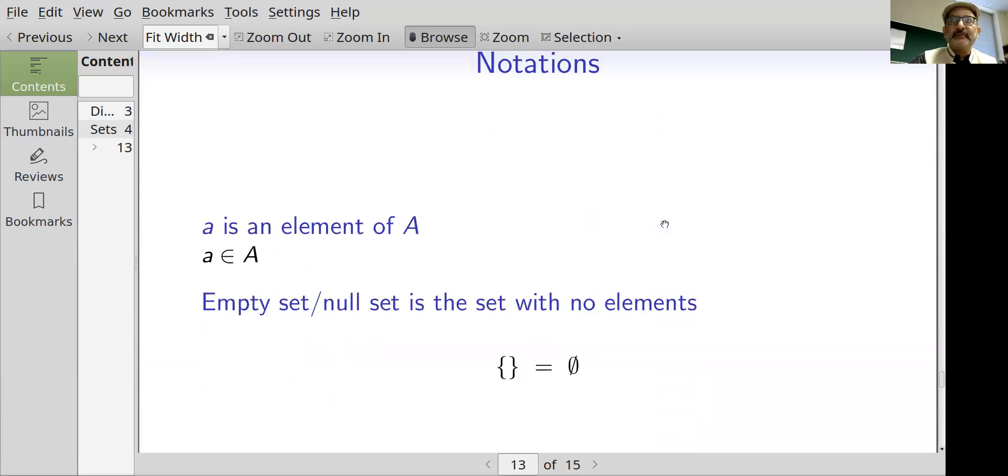A couple more notations: a is an element of A will be written like this. That means that small a is in the set capital A. The empty set or the null set is the set with no elements. It can be written in two ways: one way is to write curly brackets with nothing else inside the brackets, and the other way is this Norwegian letter.